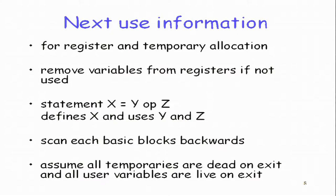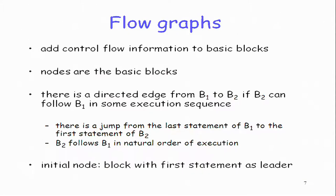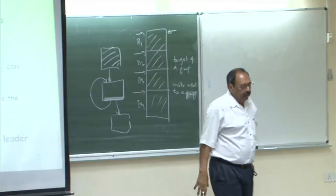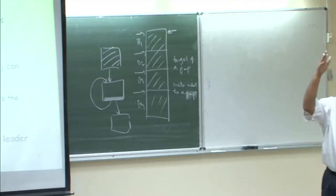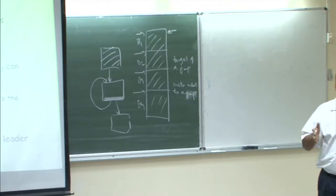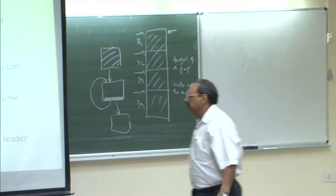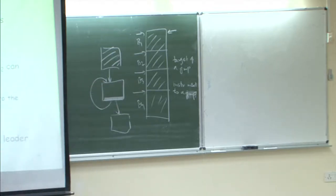Now we want to do register optimization. Register optimization, to the extent that if some value is already in a register, we want to use it. For that we compute what is known as next-use information, and it is going to be computed for each basic block. Why per basic block? Because within a basic block there is no control flow — control is strictly sequential, and we never encounter a jump instruction inside.